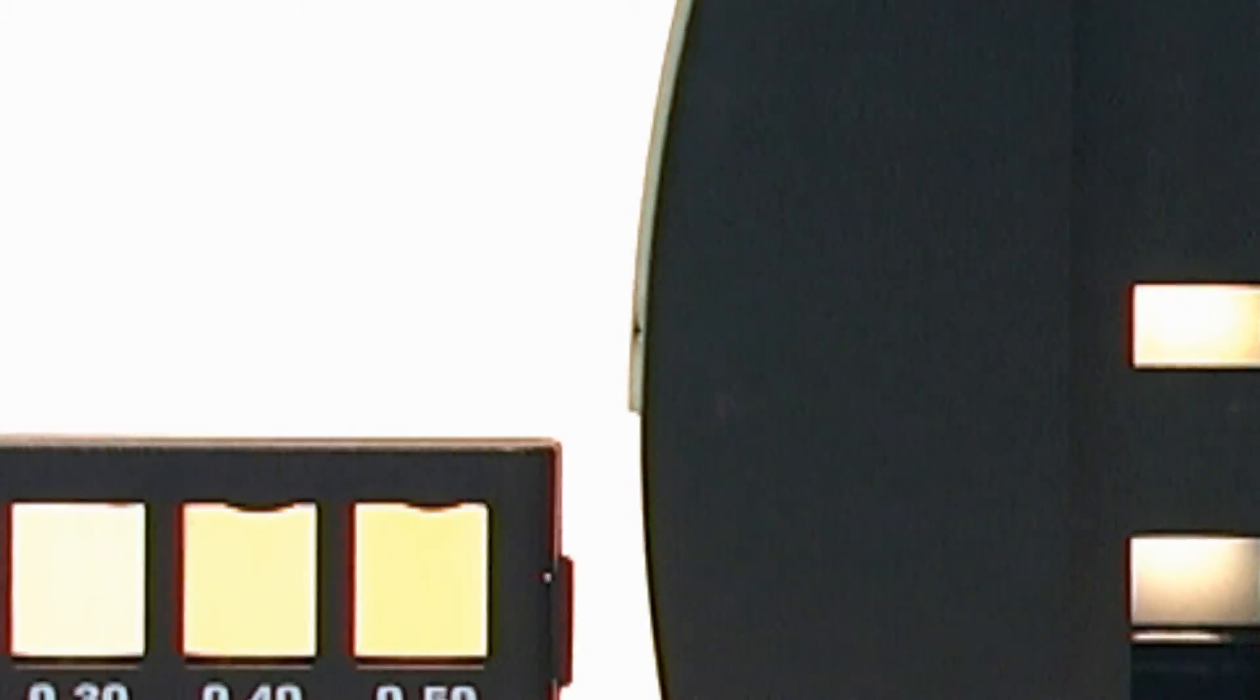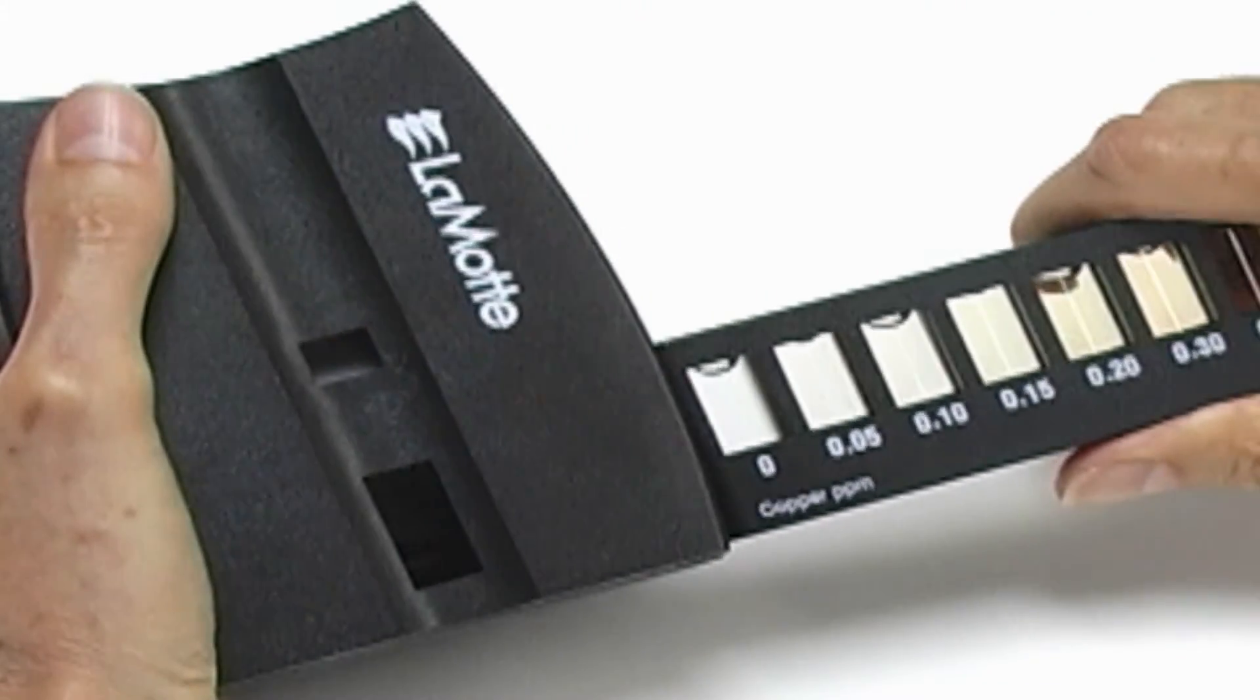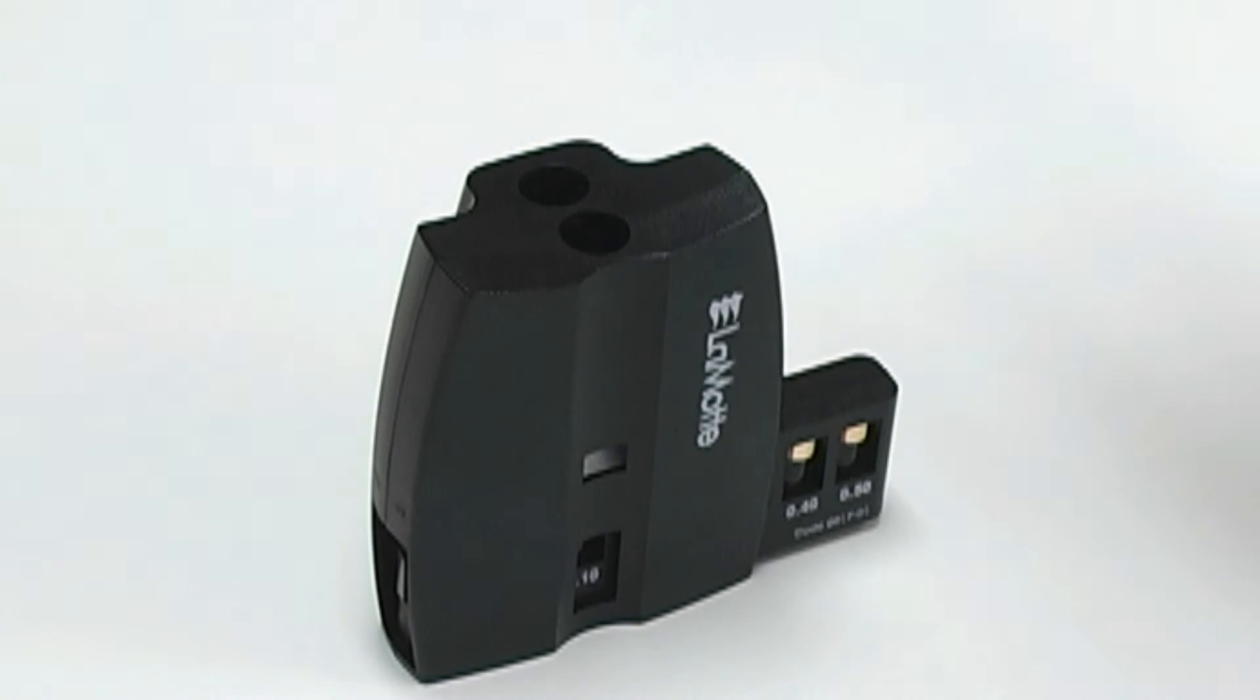Here's how to do it: slide the low range comparator bar for your test into the bottom of the comparator viewer. Fill a test tube to the 10 ml line with the untreated sample water and insert it into the rear hole of the viewer.